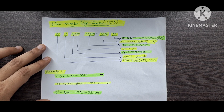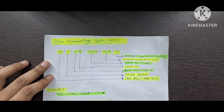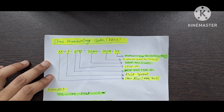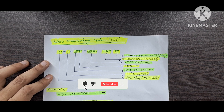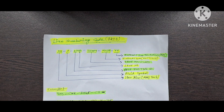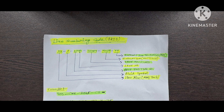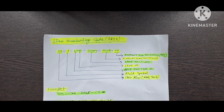Hello everyone. In this video we are going to discuss how to read the line numbering code in P&ID. If you have ever seen the P&ID, that is piping and instrumentation diagram, and you want to learn how to read it, you must know about the line numbering code. That is the first step and it is very important.